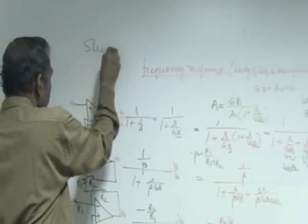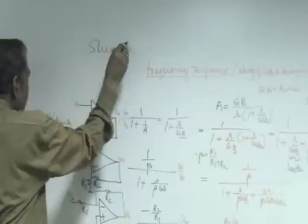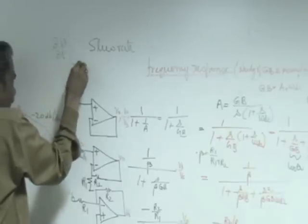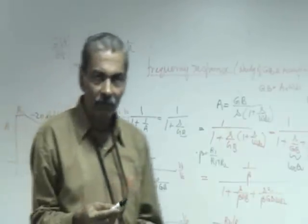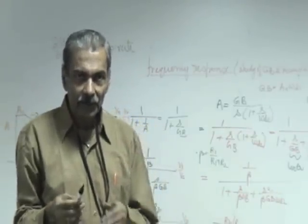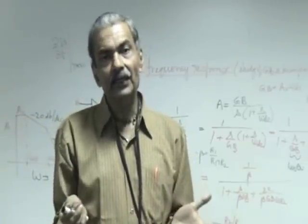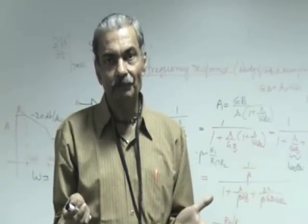Slew rate is nothing but delta V naught by delta t of the maximum that the op amp is capable of. Therefore, if you measure the slope of the output waveform we can directly measure the slew rate of the op amp.